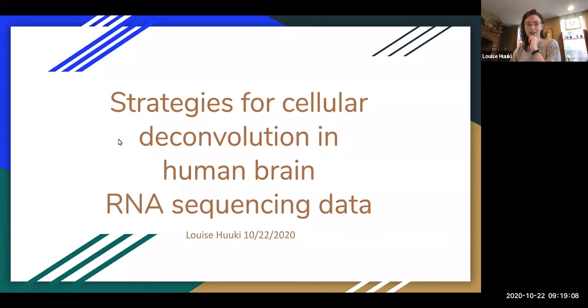All right, so I read and attempted to understand this preprint about strategies for cellular deconvolution in human brain RNA sequencing data, because we're trying to apply some of these strategies for the MDD project and get RNA fraction out of the data we have, using hopefully the data that Matt generated in his preprint, so it's all coming together.